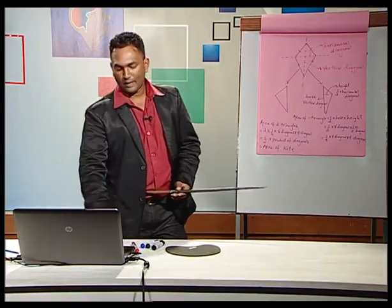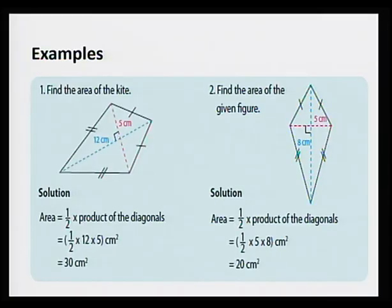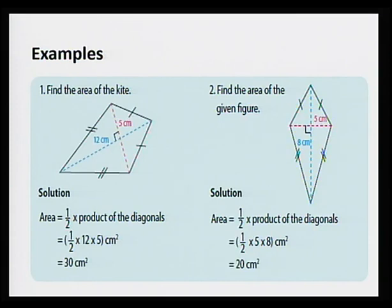Let's look at some examples. We have two kites here. In the first one, the area is half times the product of the diagonals, equal to half times 12 times 5, equal to 30 centimeters squared. Remember, we are working with area, so the unit is centimeters squared. In the second example, the diagonals are 5 centimeters and 8 centimeters. So the area will be half times 5 times 8, equal to 20 centimeters squared.